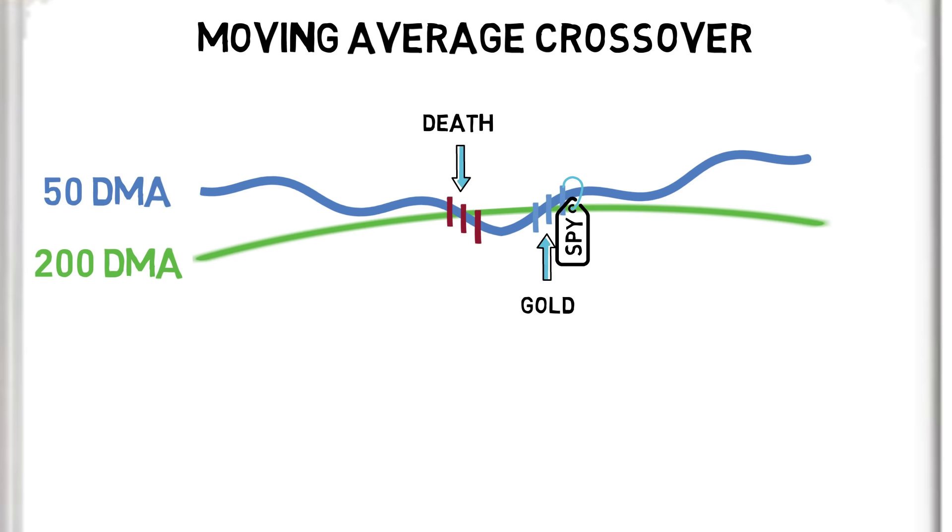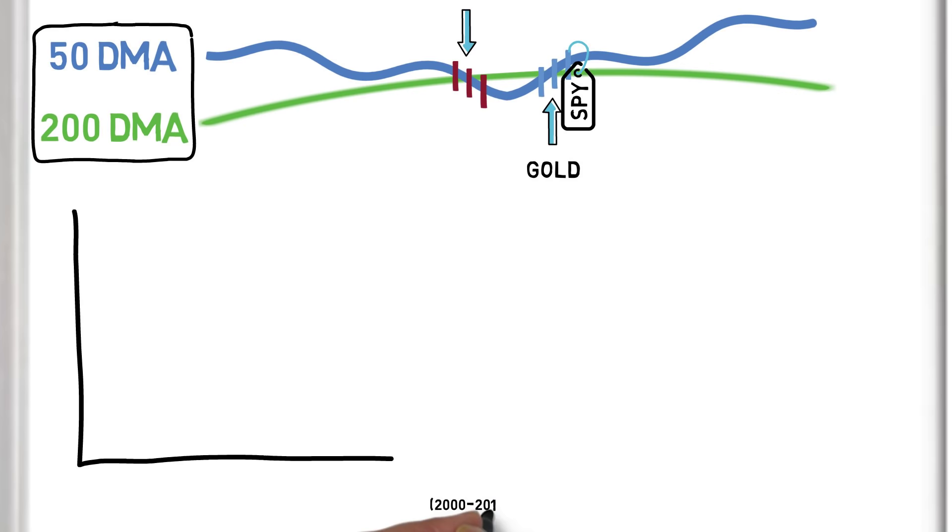Unlike the previous examples, this system relies on the moving average lines only and not the daily price action. Using the same time horizon as before, we can compare buy and hold with this simple 50 and 200 day crossover strategy.